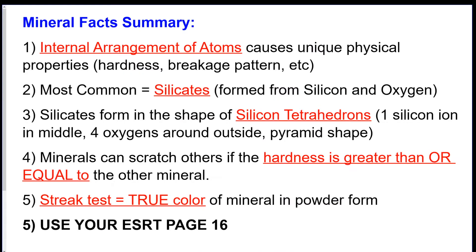Moving on, I made a summary cheat sheet for you. These are the general things you've got to remember besides using page 16. First, the internal arrangement or structure of the atoms is going to cause the physical properties of the mineral — its hardness, its breakage pattern, anything physical about it, including its density. The most common minerals are silicates. Silicates are in the shape of a silicon tetrahedron, which is a pyramid shape with one silicon ion in the middle and four oxygens around the outside.